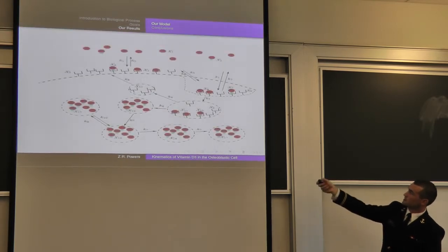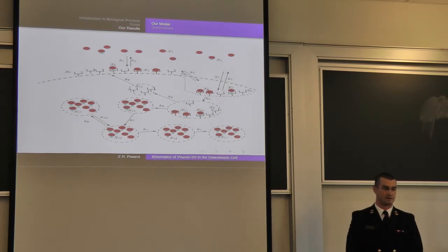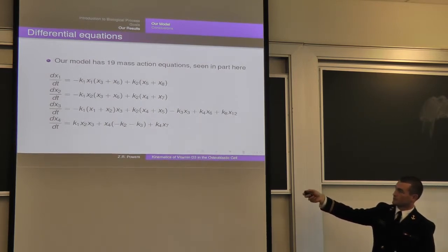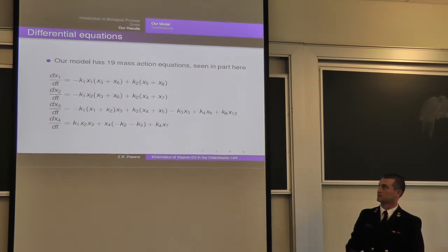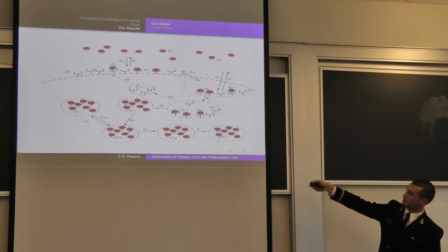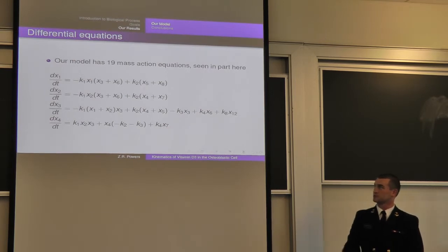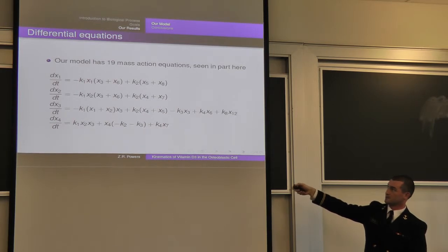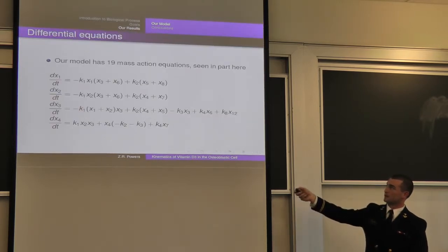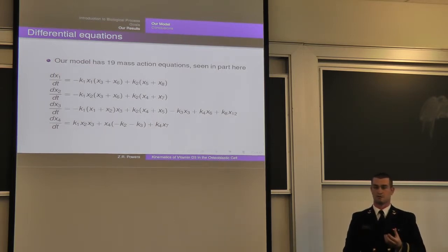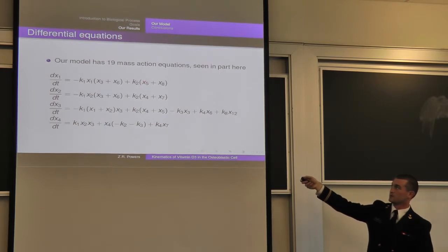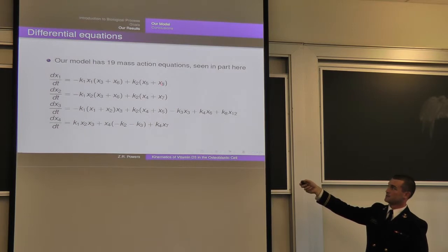X1 is unbounded D-binding protein — D-binding protein in the serum that does not have a 25D molecule bound to it. We have a proportionality constant, and the amount of free D-binding protein in the serum decreases proportionally to the amount of D-binding protein and the empty buffer receptors, and also decreases proportionally to the product of the free D-binding protein in the serum and the empty receptors in the coated pits. It increases proportionally to the constant representing the rate at which receptors that have already captured a D-binding protein release them back into the serum — so the amount of D-binding protein goes up proportionally to the amount of occupied receptors in both the buffer and the coated pits.